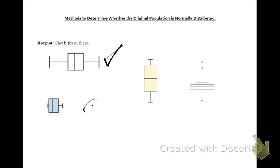However, this one has an outlier, so you would say for this box plot, your data is probably not from an originally normal population.